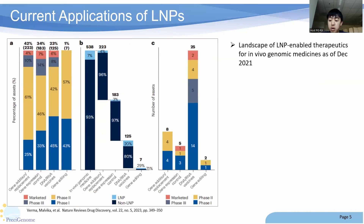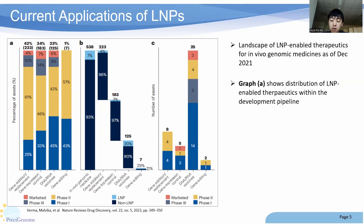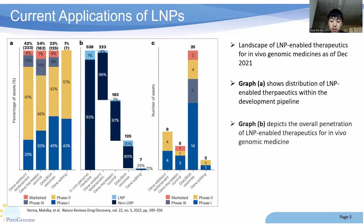These next graphs show the landscape of LNP-enabled therapeutics for in vivo genomic medicine as of December 2021. Graph A shows the distribution of LNP-enabled therapeutics within the development pipeline — you can see that even at the end of December 2021, there's a very small percentage of marketed LNP therapeutics, with the majority of assets still in the developmental and clinical trial phases. Graph B depicts the overall penetration of LNP-enabled therapeutics for in vivo genomic medicine, and we can see that when comparing LNP to non-LNP medicines, LNP-based therapeutics have barely scratched the surface.